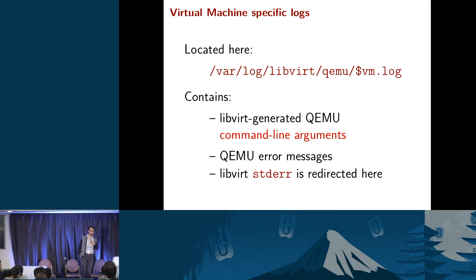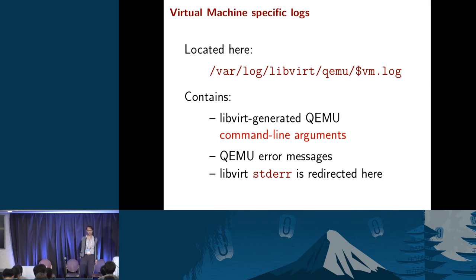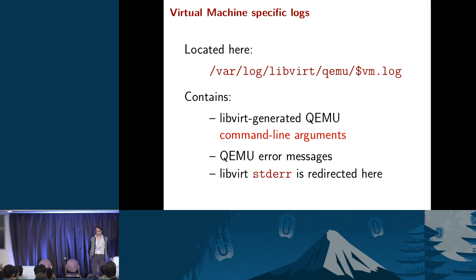Since the talk focuses on LibVirt and QEMU, let's look at the tools available to debug virtualization drivers. Guest-specific logs are located in /var/log/libvirt/qemu/. Nova instances are named by long UUIDs rather than vm1, vm2, etc. The VM log files contain the LibVirt-generated QEMU CLI, LibVirt's standard error stream, and any error messages specific to QEMU. These are the first place to look when debugging virtualization drivers.